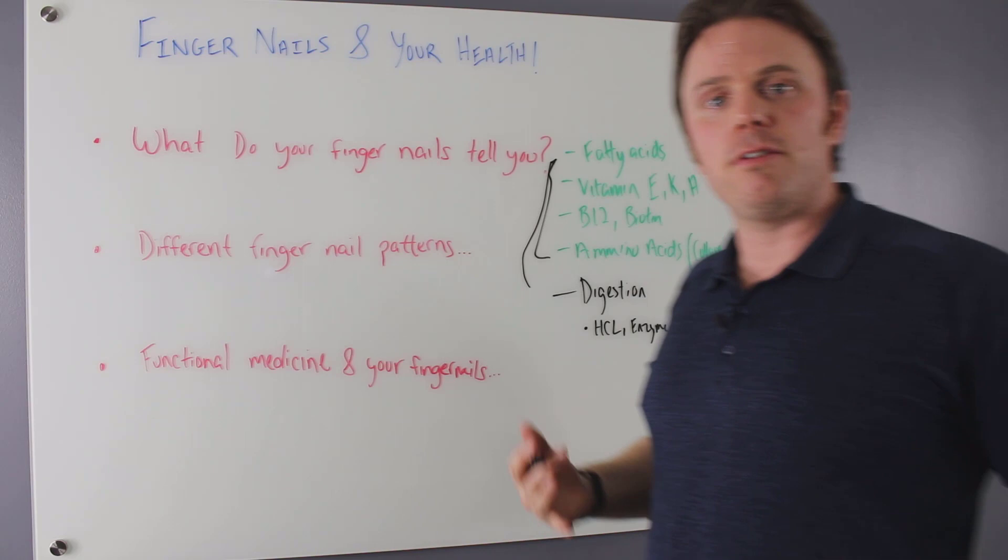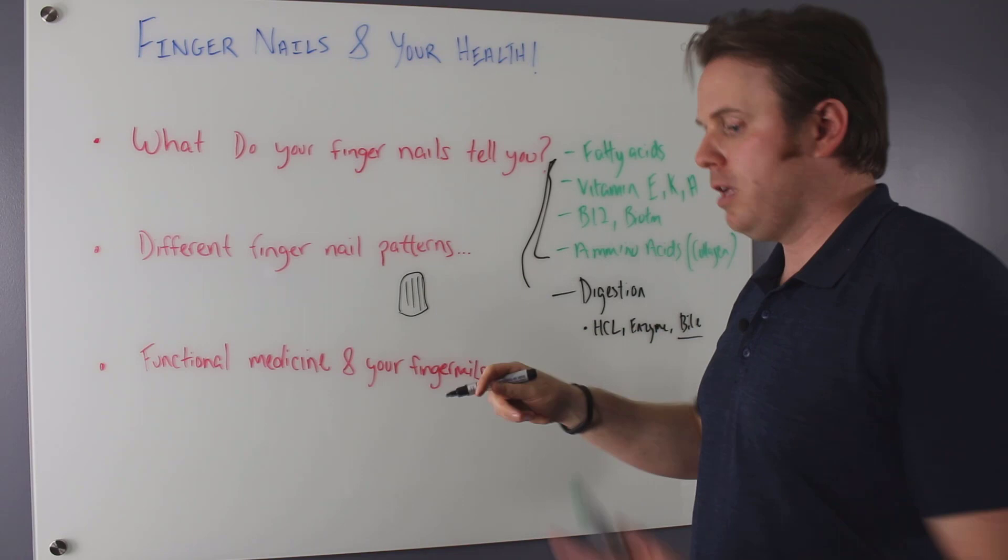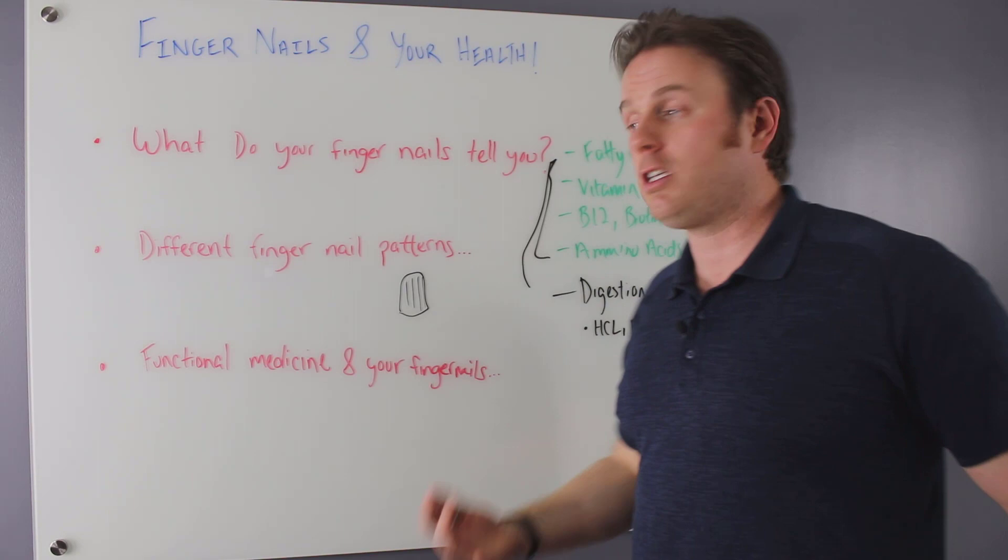So different patterns of fingernails. We have just your typical vertical ridging, right? So if here's your fingernail, we just have these gentle lines like this. And if you run your finger over across it like this, you feel those bumps. And again, different essential fatty acids and amino acids can really create issues there.